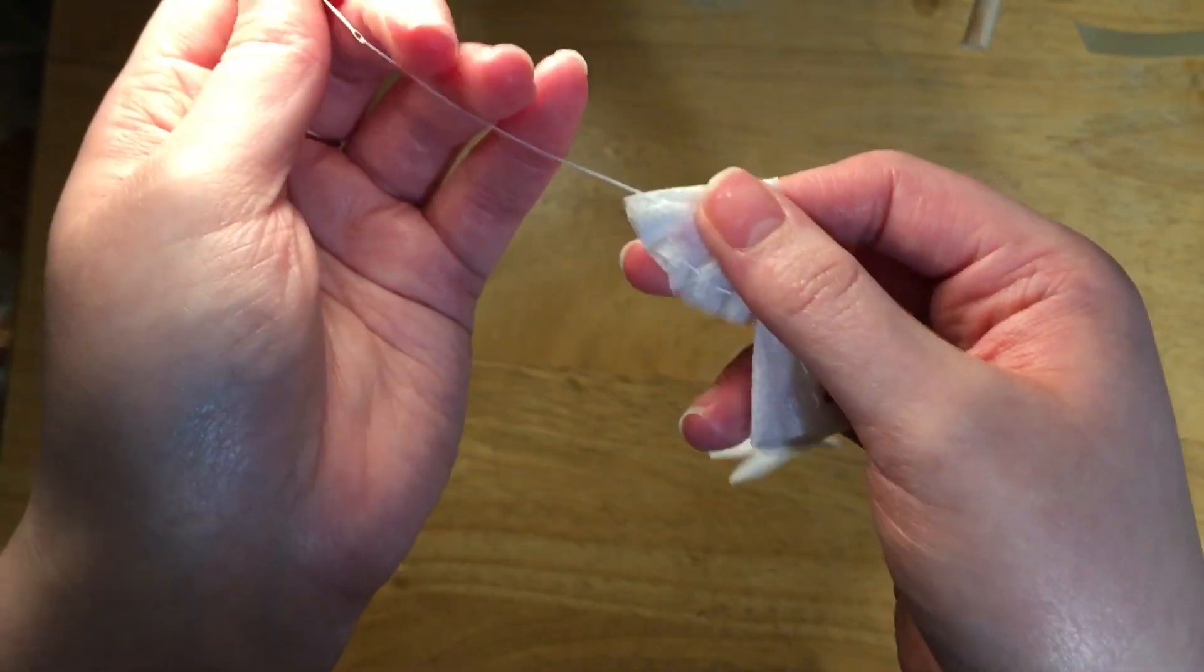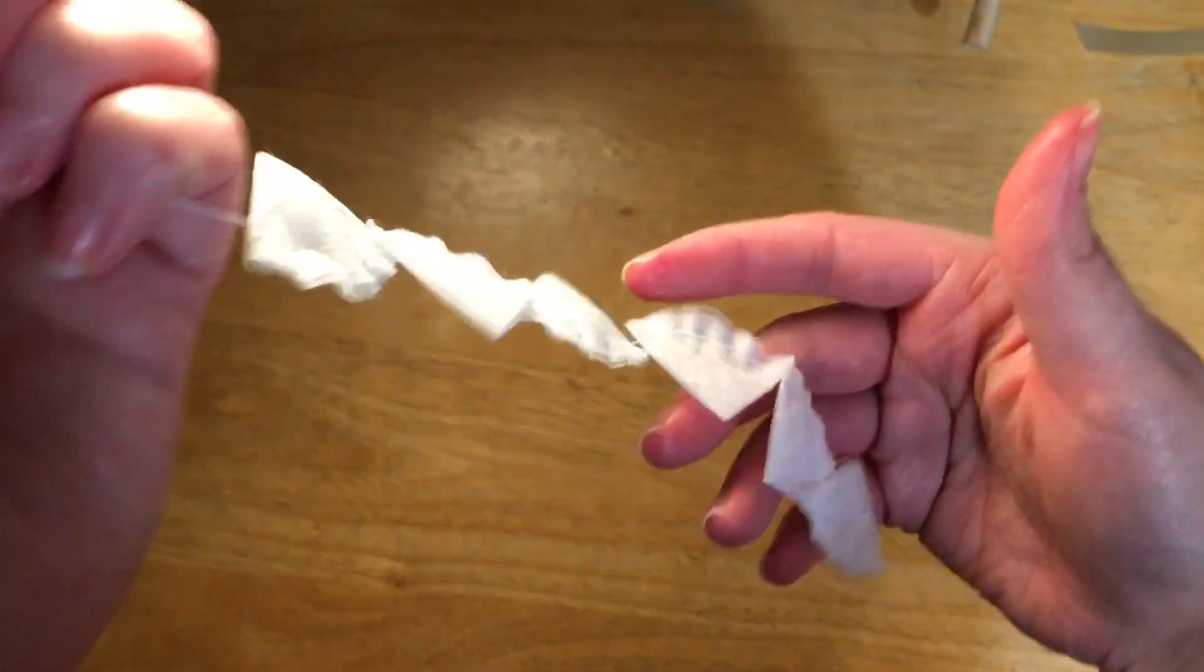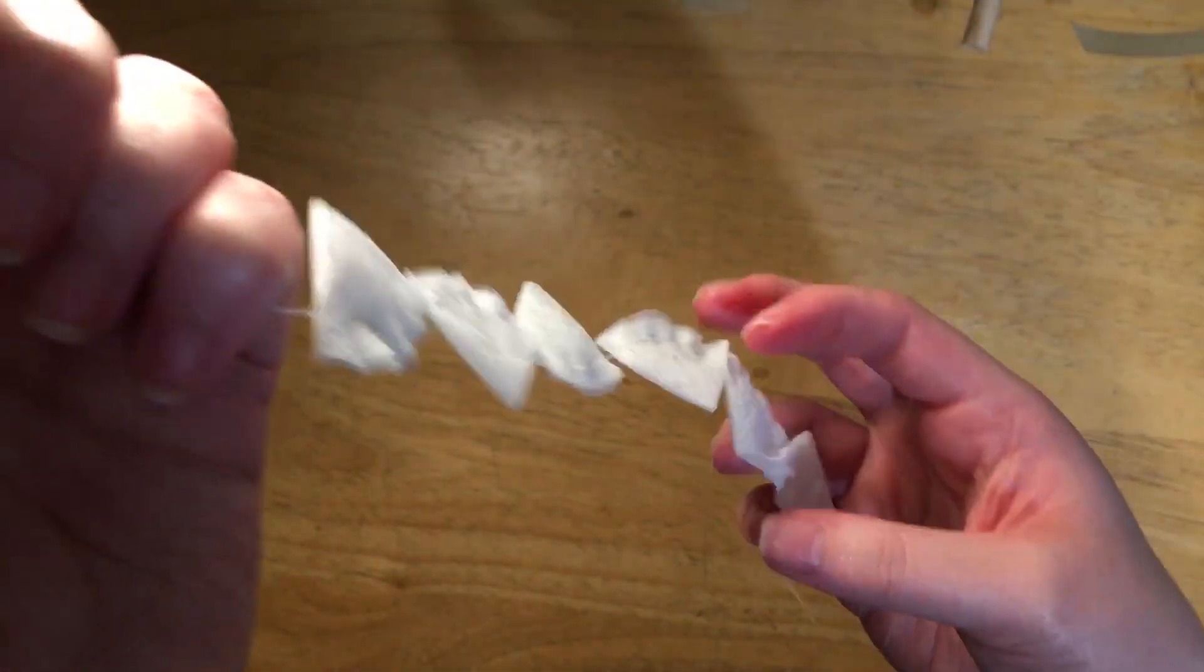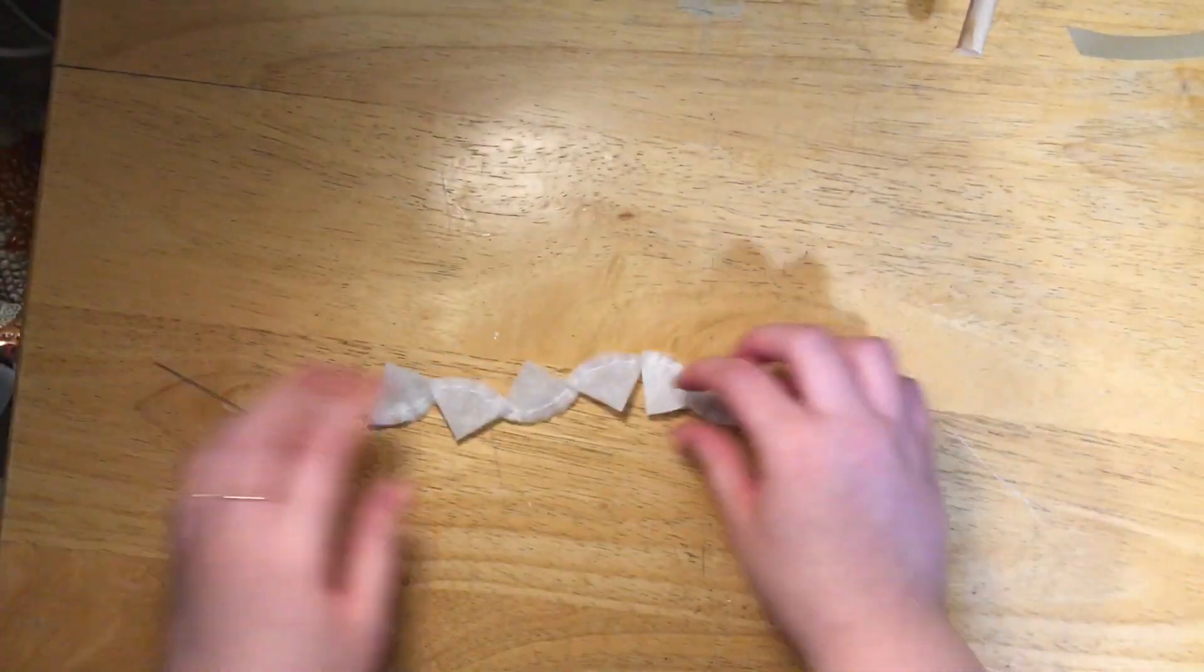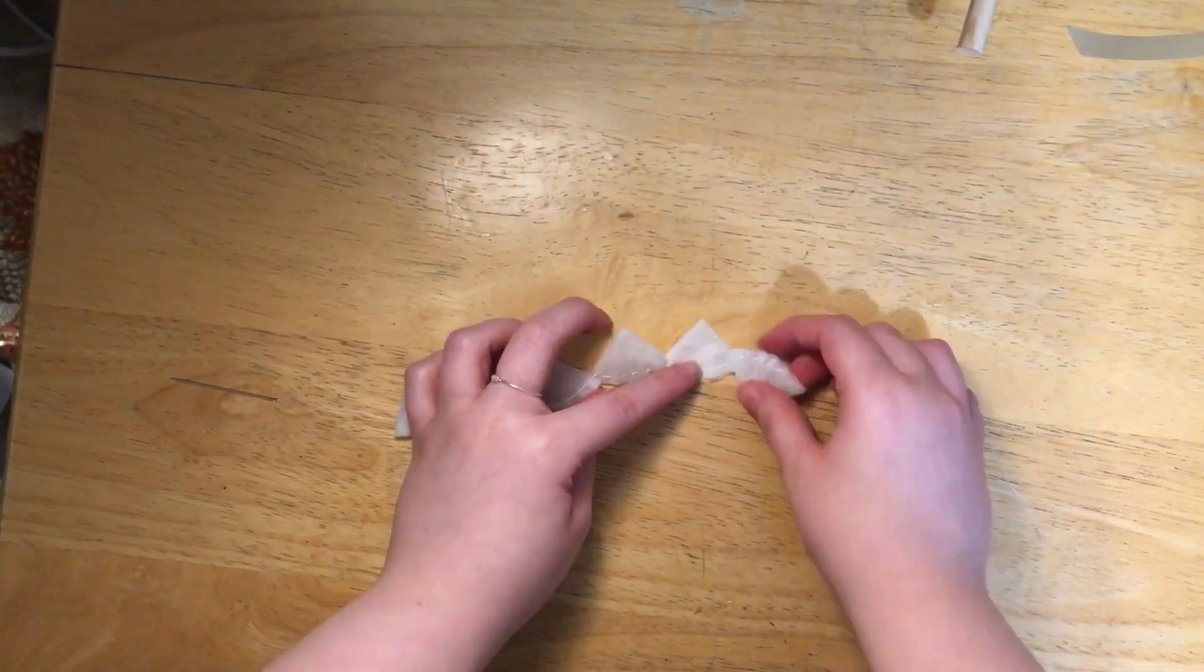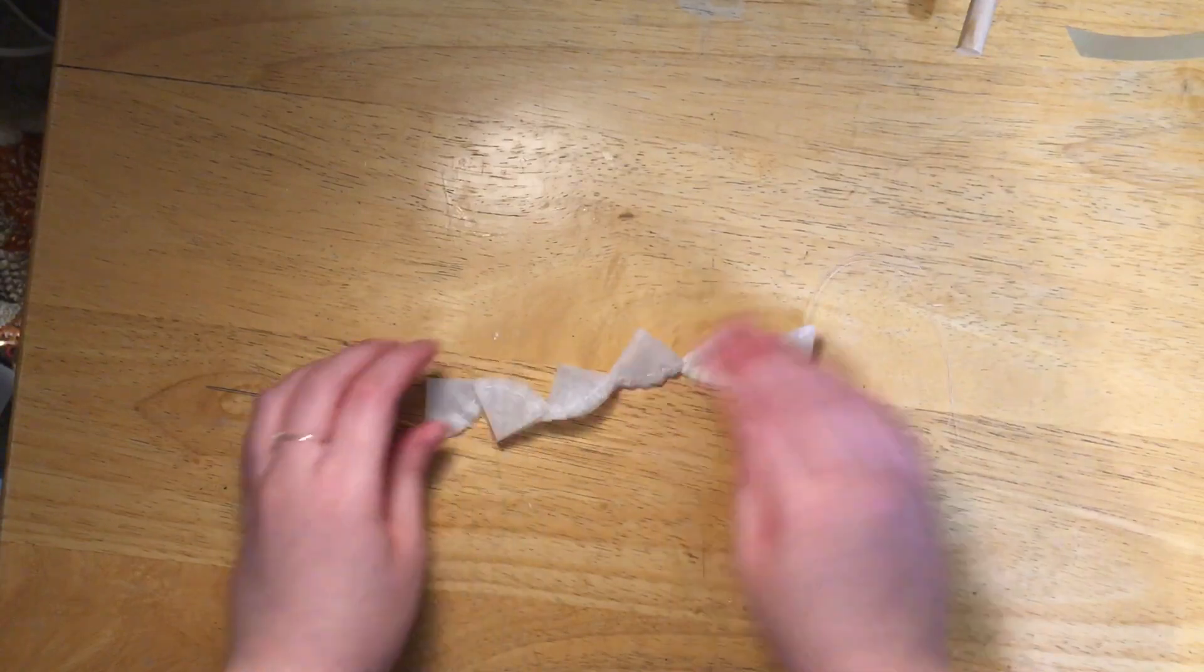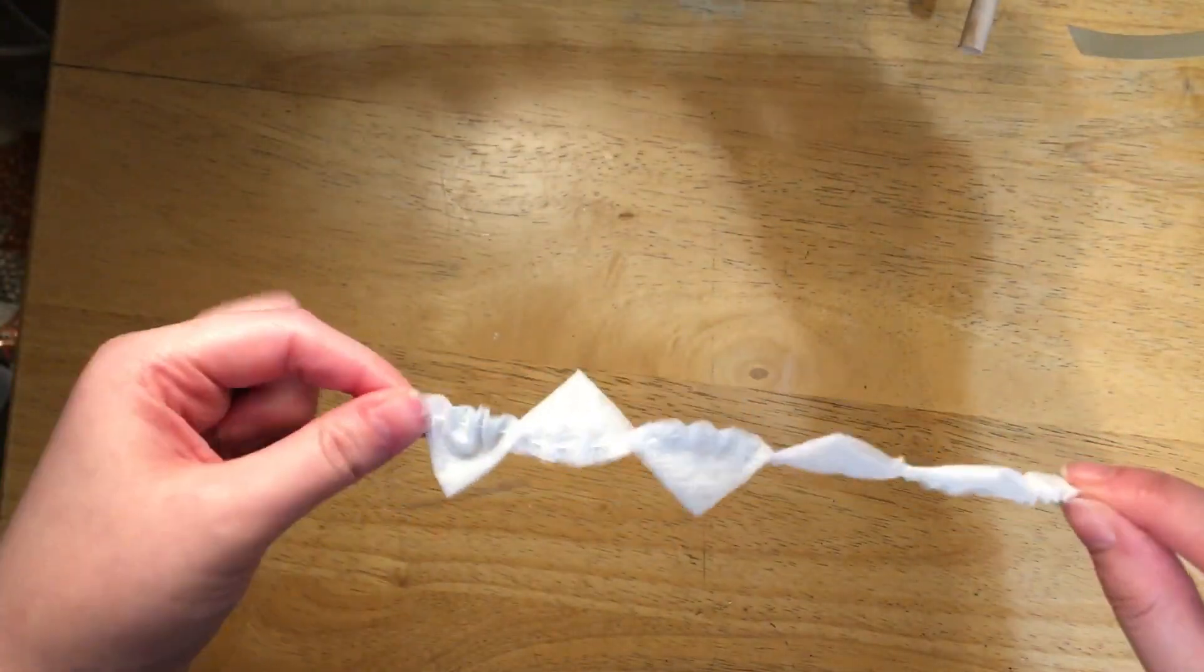Coming up here close to the camera, I'm just going to weave in and out along the bottom and then pull it down onto my thread. As you can see, I've already got my other five on here, so I have a total of six, and then I'm going to flip them all around the right way.